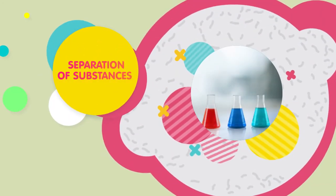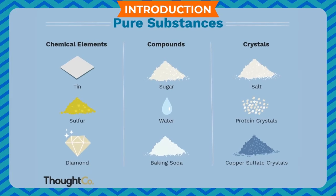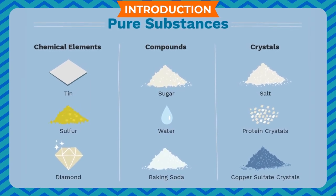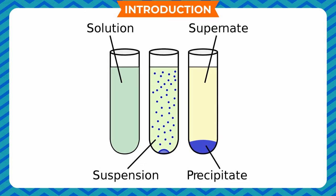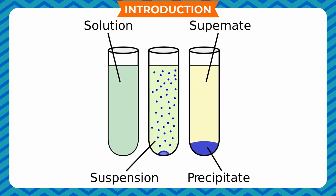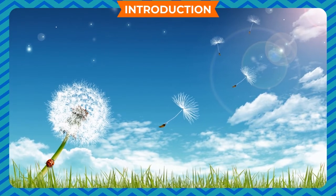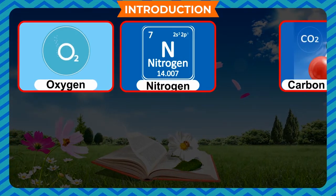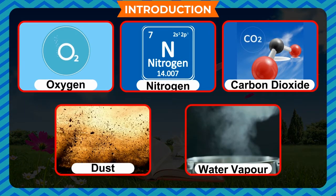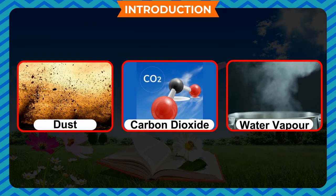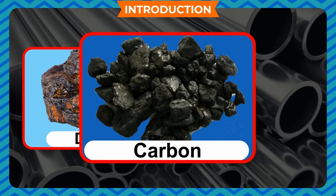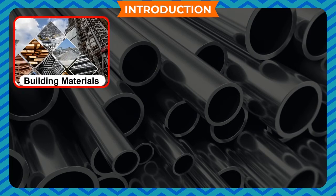Separation of substances introduction: pure substances are either elements or compounds. They are rarely found in pure form in nature; they have one or more substances mixed with them, either as an impurity or intentionally mixed for a particular application. For example, air consists of oxygen, nitrogen, carbon dioxide, dust, and water vapor. Steel is a mixture of iron and carbon.